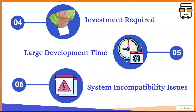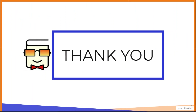The last constraint is the system incompatibility issue. There might be a situation where the MIS has to communicate with software programs and hardware already existing in the organization. If the new MIS is not compatible with the old systems, management might decide not to use the MIS at all, because implementing it would also require changing the old systems, demanding additional time, effort, and cost. So these are the constraints that lead to either a delay in usage of the MIS or the organization not utilizing it at all.